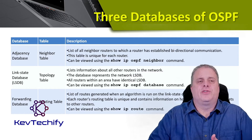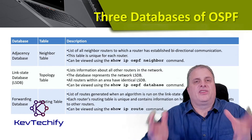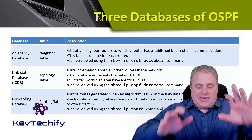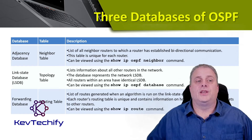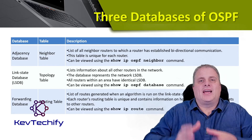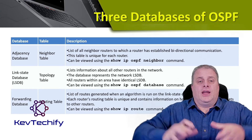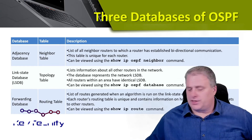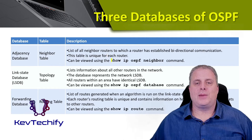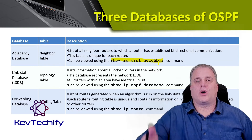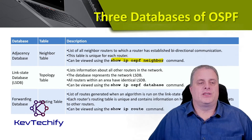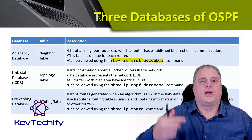OSPF maintains three different databases for link state routing. The first is the adjacency database, which keeps track of who its neighbors are. The adjacency database is unique to each router because each router has different neighbors. We can view this using the show IP OSPF neighbor command, which will show us all the neighbors OSPF has learned.